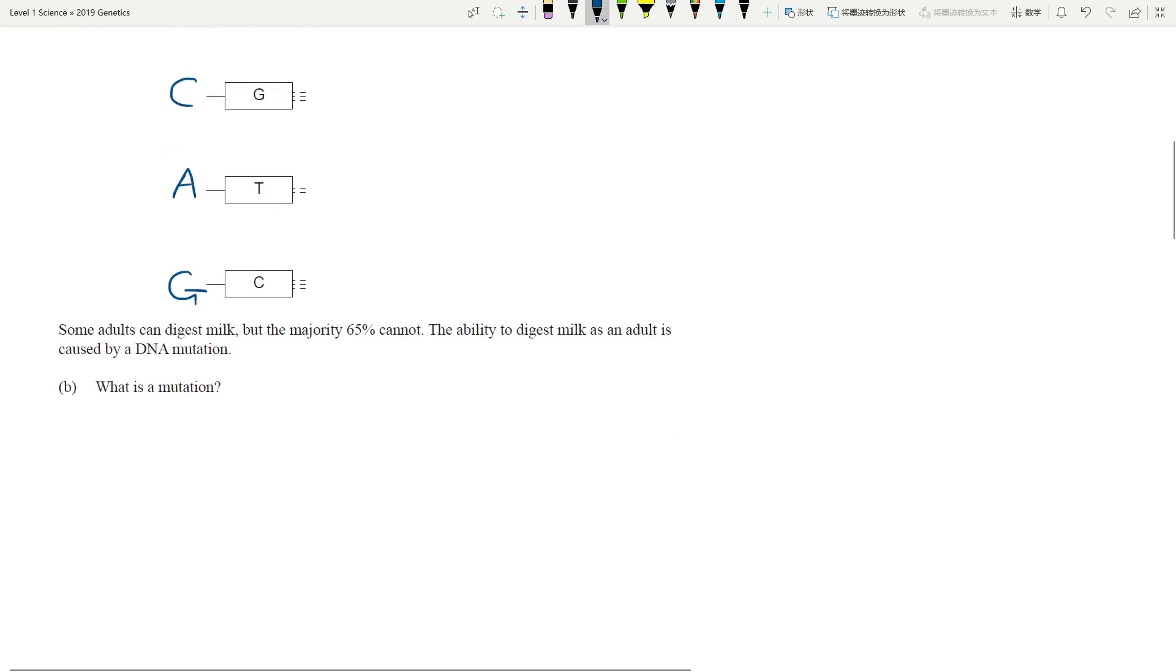Now mutation. Let's look at the question. Some adults can digest milk but the majority, 65%, cannot. This is caused by DNA mutation. What is a DNA mutation? A mutation is the permanent change of the base sequence of the DNA. You have a change in the base sequence of DNA.